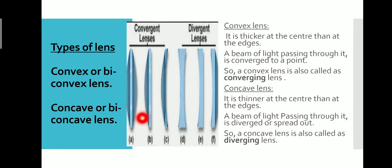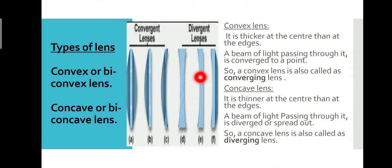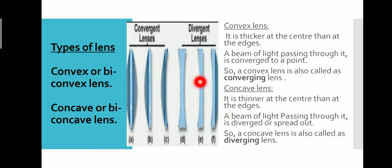This is your convex lens — it is thicker at the middle and thinner at the edges, so it is a converging lens. And this is your concave lens — thinner at the middle and thicker at the edges. When the light rays pass through it, it diverges the rays, so it is a diverging lens.